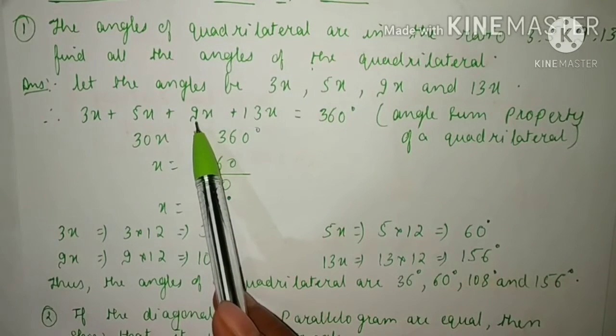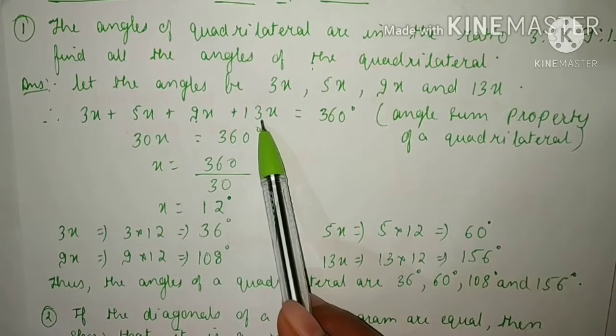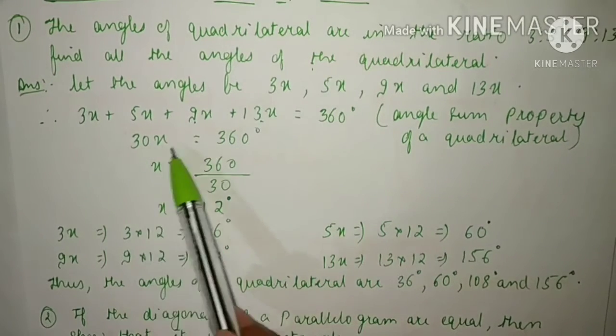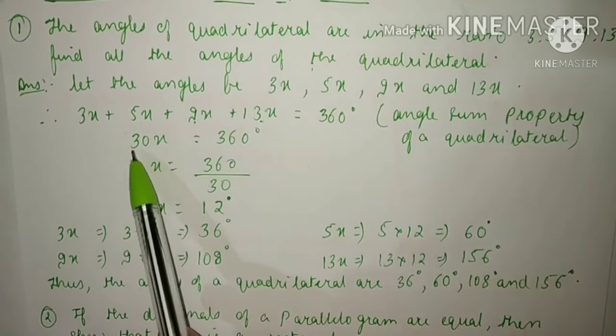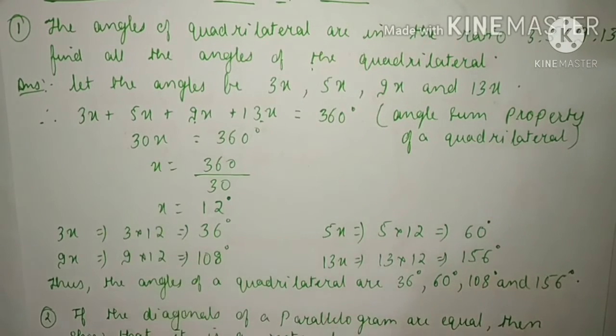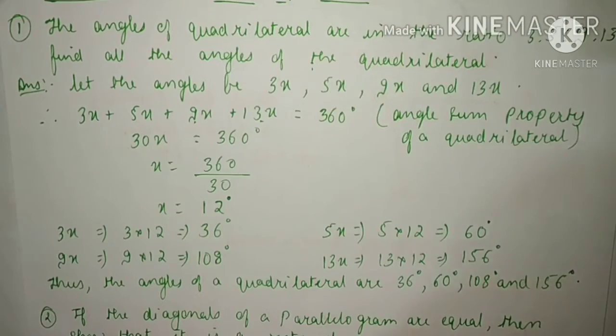When we transpose this 30 to the right hand side, it will be divided. So x equals 360 divided by 30. Cancel the zeros: 36/3 equals 12.